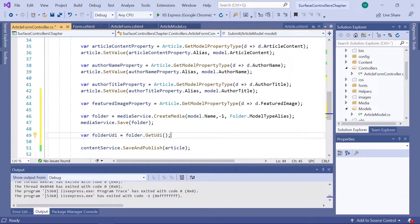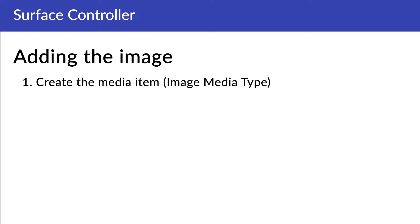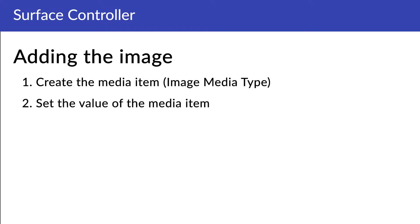Now let's take a quick look at what we'll be doing for adding the image. Adding an image to our content node consists of three equally important steps. The first step is to create the media item, using the image media type. The second step is to set the value of the media item — fetching the uploaded image from the input stream and adding it to our newly created media item. The third and final step is to add the media item to our content node, to our article.